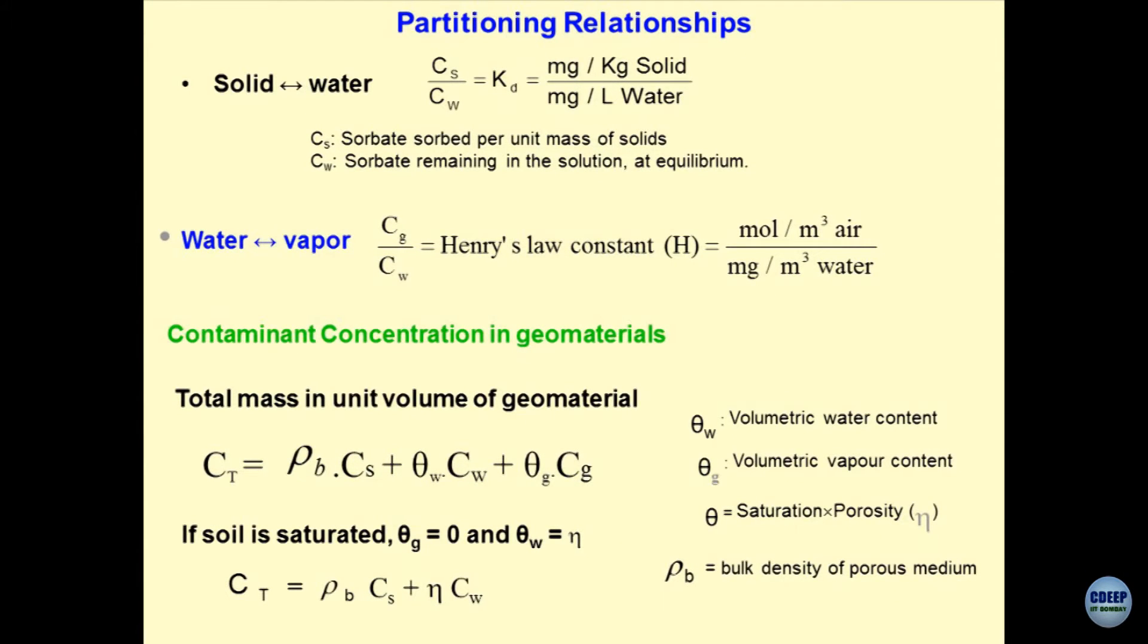The second one, which is quite intricate and difficult to simulate in the laboratory condition would be water-vapor. Nature does it very beautifully, it is not easy to create interface between water and vapor in the laboratory circumstances. You must have heard the Henry's law. So, what is Cg, here we use Cs upon Cw, this is Cg upon Cw. But the guys who are working in the field of climate science, aerosols, air quality analysis, I hope you realize the water-vapor interaction is going to be extremely important.